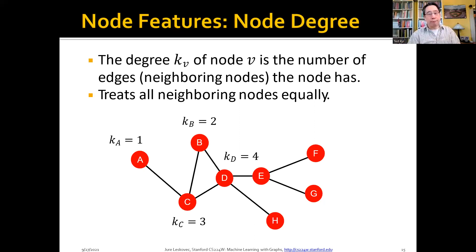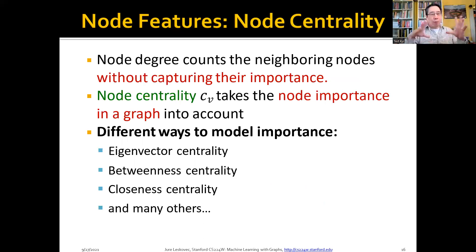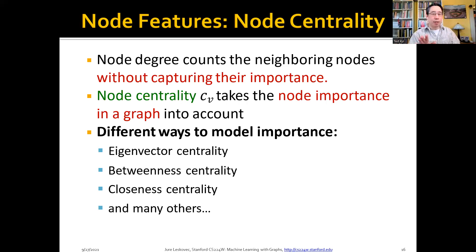For something more complex — like identifying the most preeminent AI researchers — the person most active on social media with the most followers isn't necessarily the most preeminent. Maybe it matters how important their followers are. We can progress in complexity from simple node degree to capturing the importance of the neighborhood around a node. There are lots of different ways to do this; we'll talk about a handful here, including eigenvector centrality.